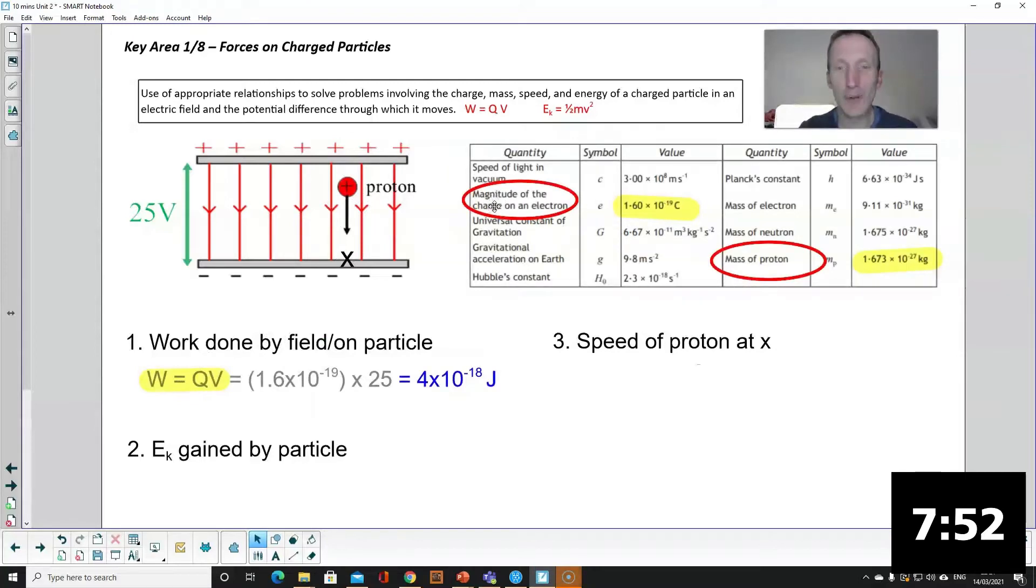You get that from your datasheet. You only get the charge of an electron on your datasheet but remember that the size of the charge on a proton is the same. And then V is the potential difference of the field.